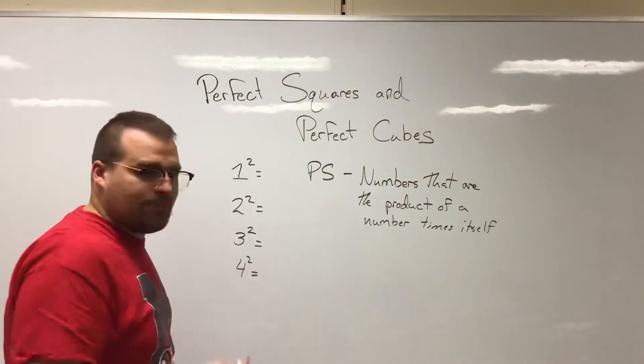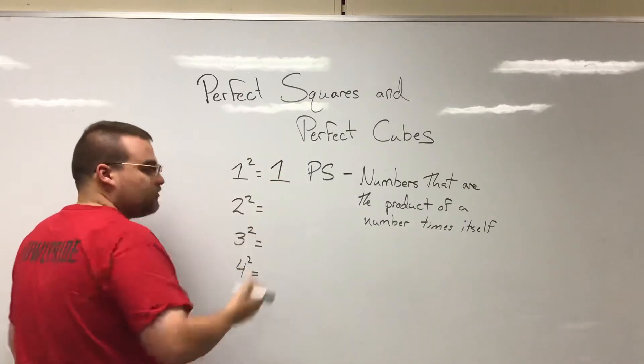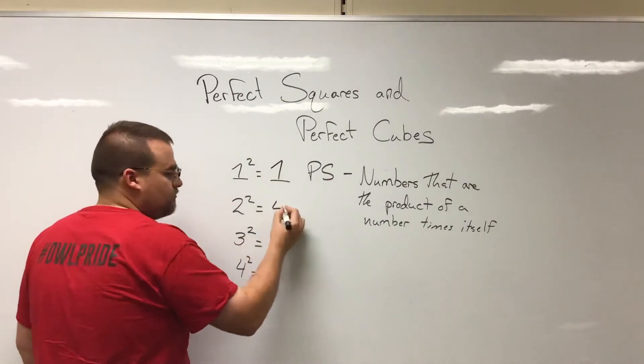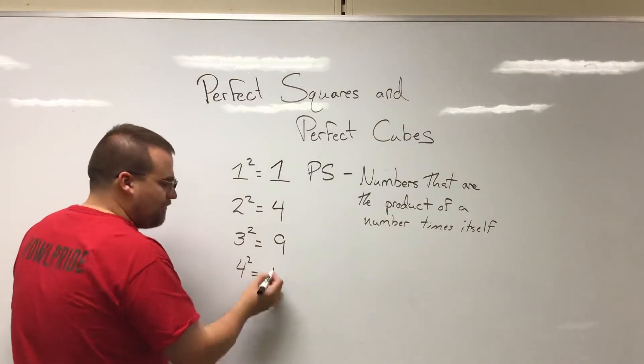What's one squared, or one times one? It's one. Two squared, two times two is four. Three squared, or three times three is nine. You get the hang of it here.